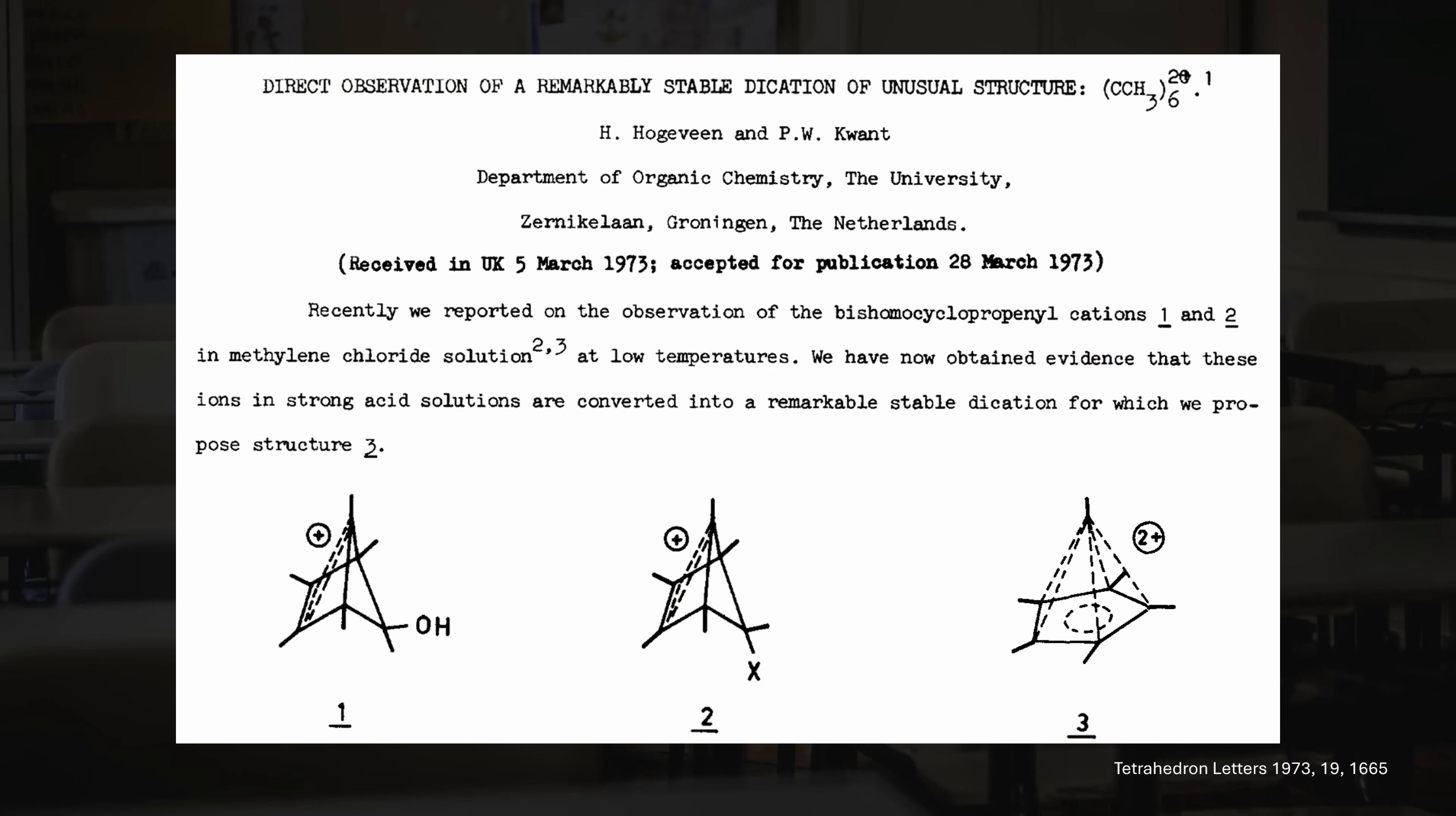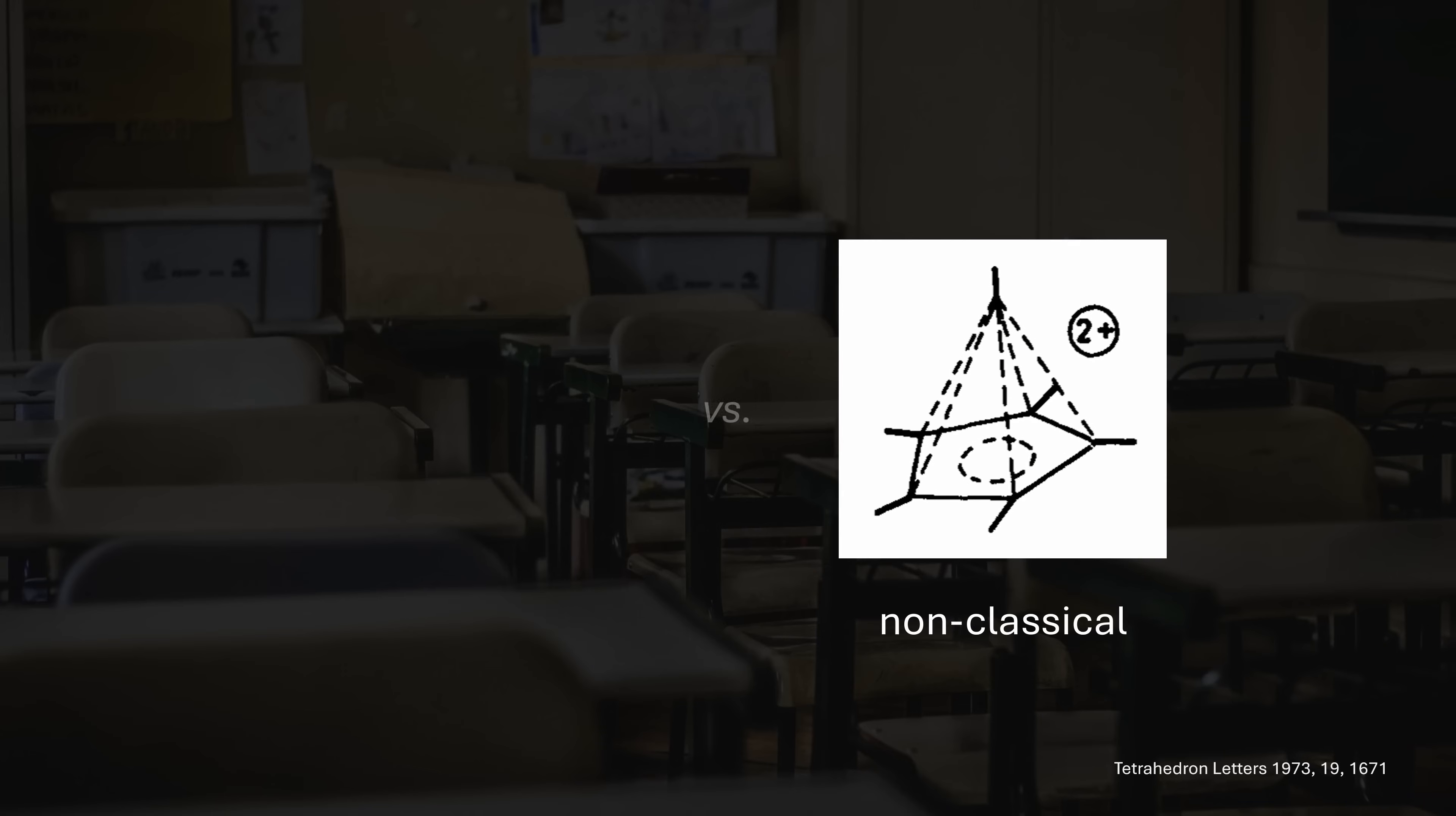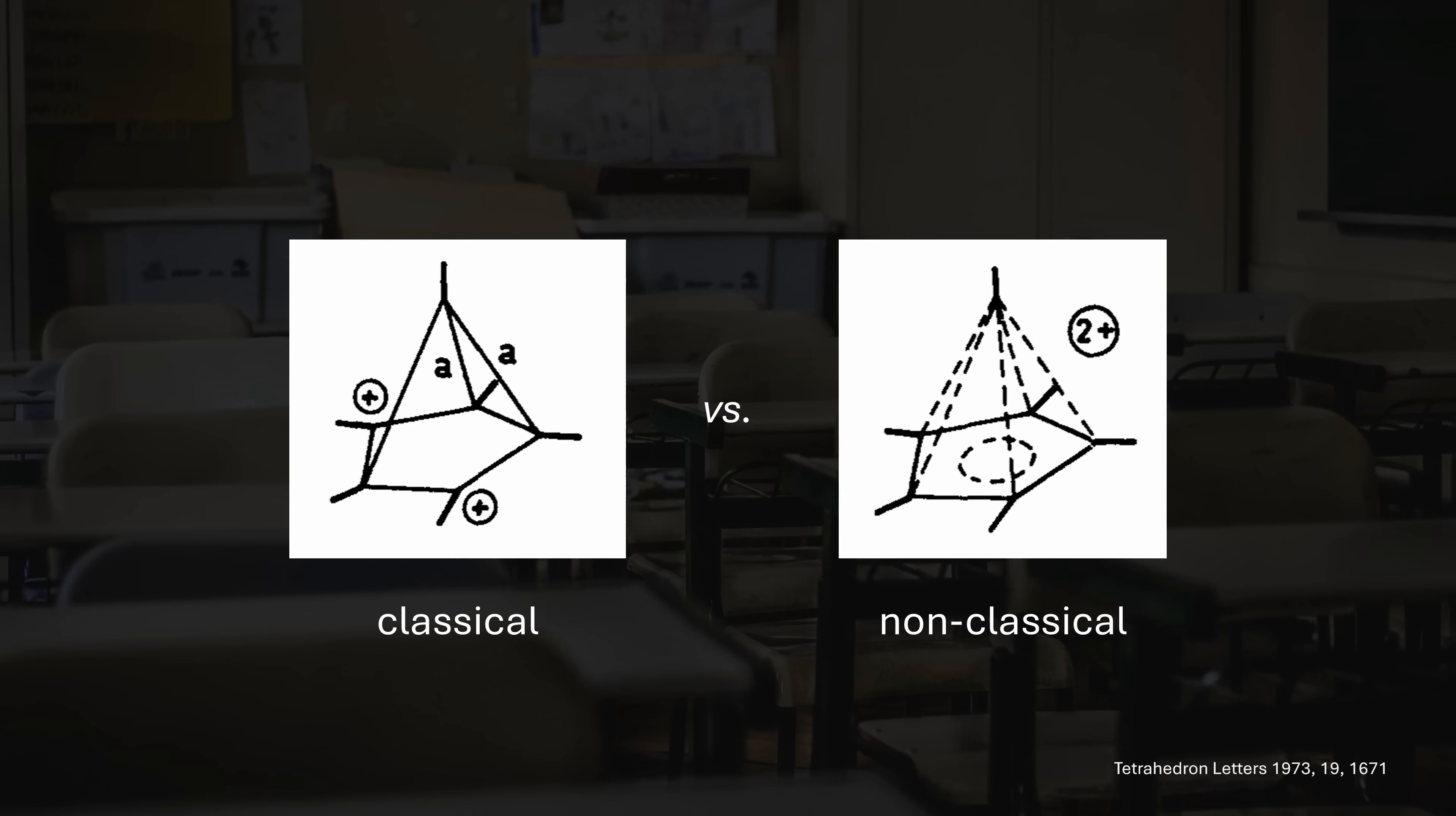So, compared to the disputed norbornyl cation, the hexamethylbenzene dication received much less attention. The cursed structure was, however, directly proposed upon its first synthesis 50 years ago, which I find is quite impressive, based on just NMR and some ancient computational methods. Still, it wasn't clear which structure was really present, and we still need to answer if the carbon is truly hypervalent here.